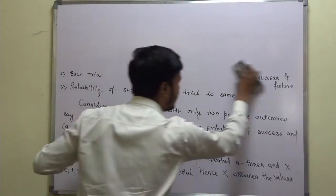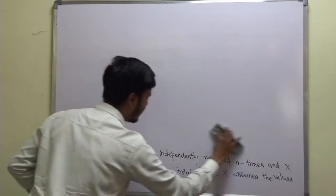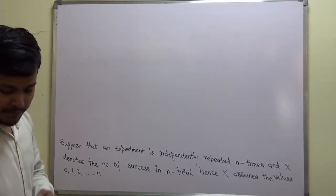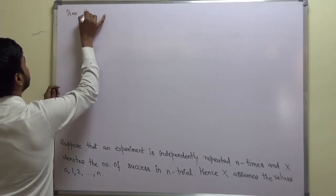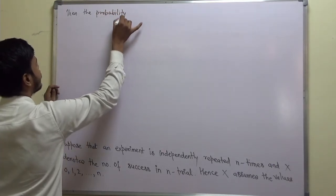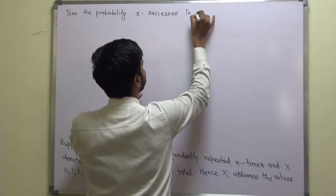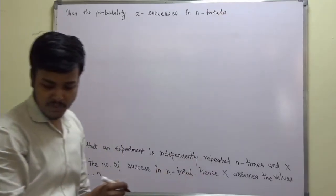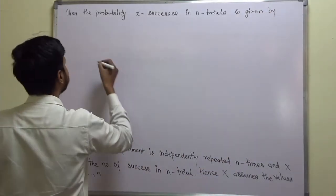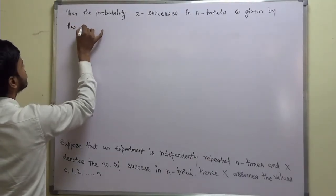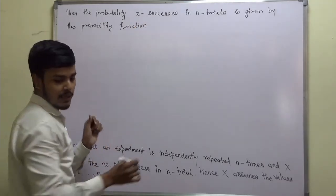So, this is about the binomial. Now, why is it called Bernoulli's? Why is it called binomial distribution? We are coming to that. The probability of X successes in N trials is given by the probability function F of X.